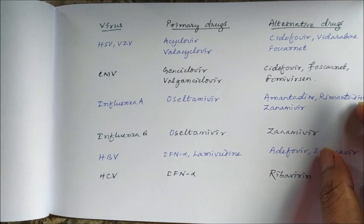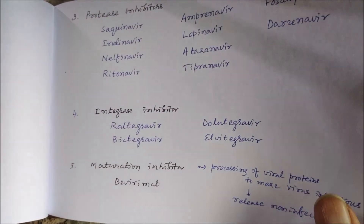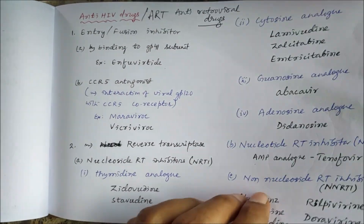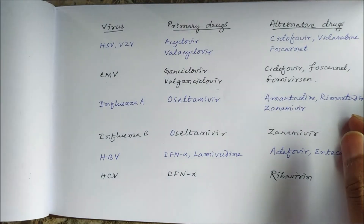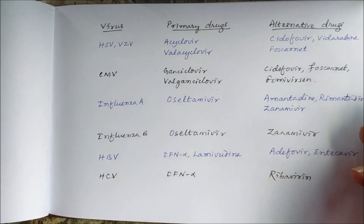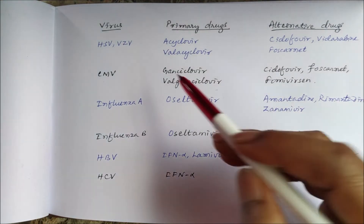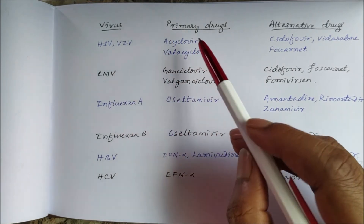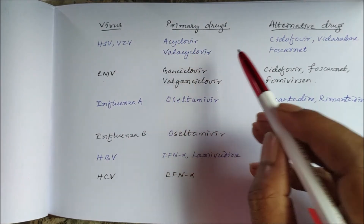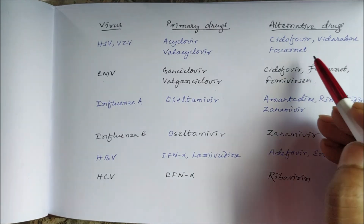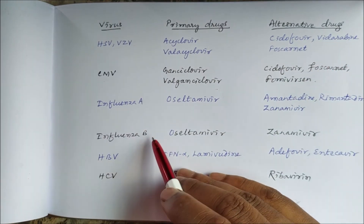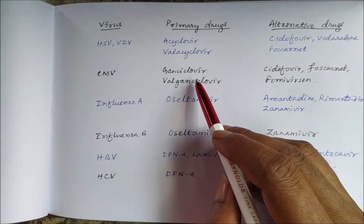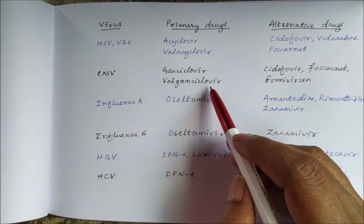All these antiretroviral drugs are used in HIV/AIDS (acquired immunodeficiency syndrome). For other viruses: in herpes simplex virus or varicella zoster virus, the drug of choice is acyclovir or valacyclovir; alternatives include cidofovir, vidarabine, and foscarnet. For cytomegalovirus, the drug of choice is ganciclovir or valganciclovir.